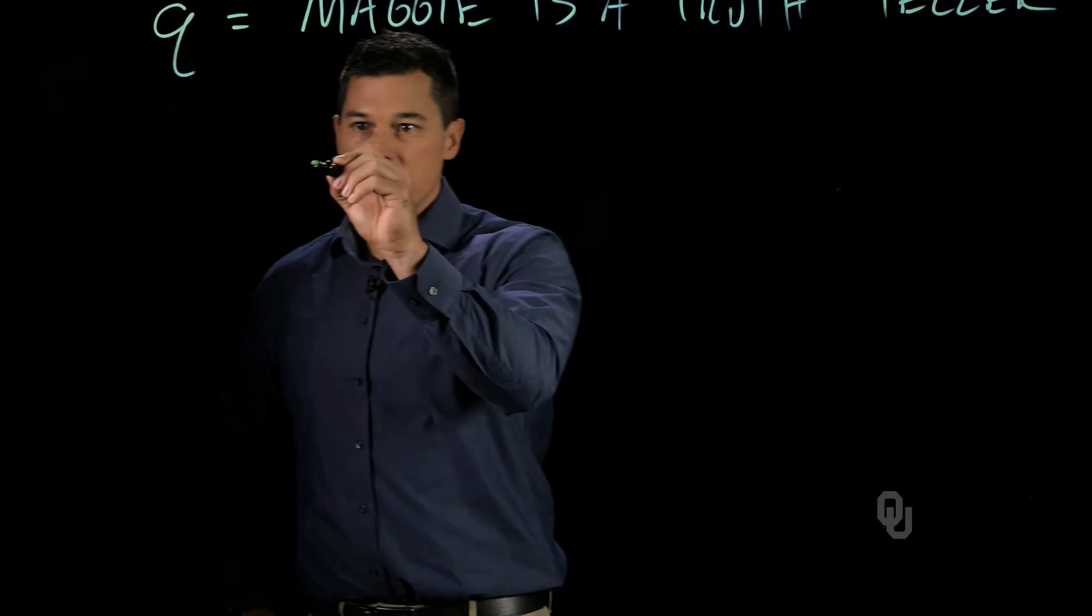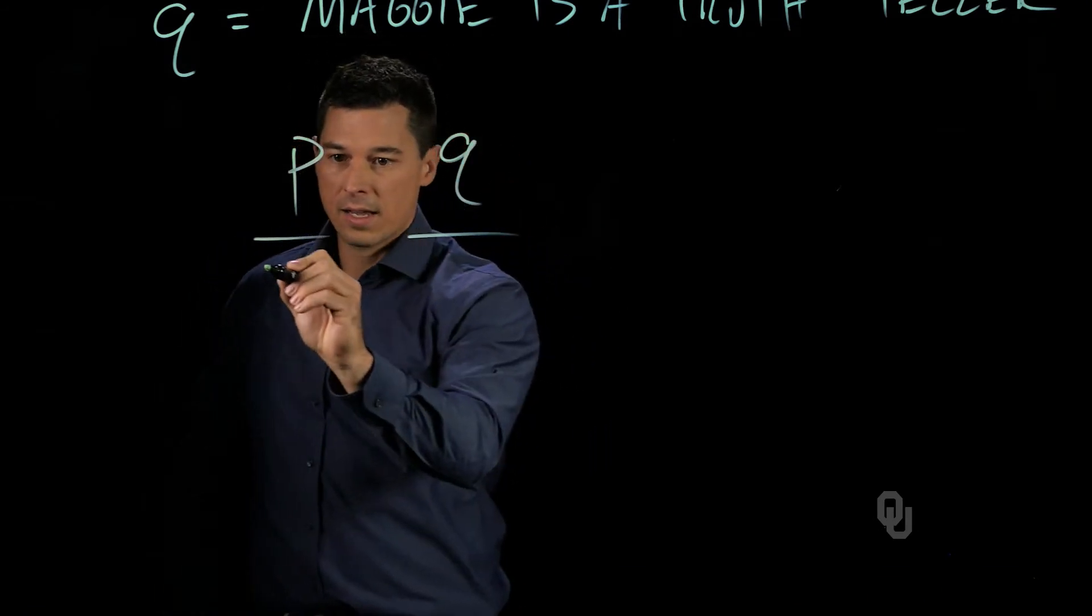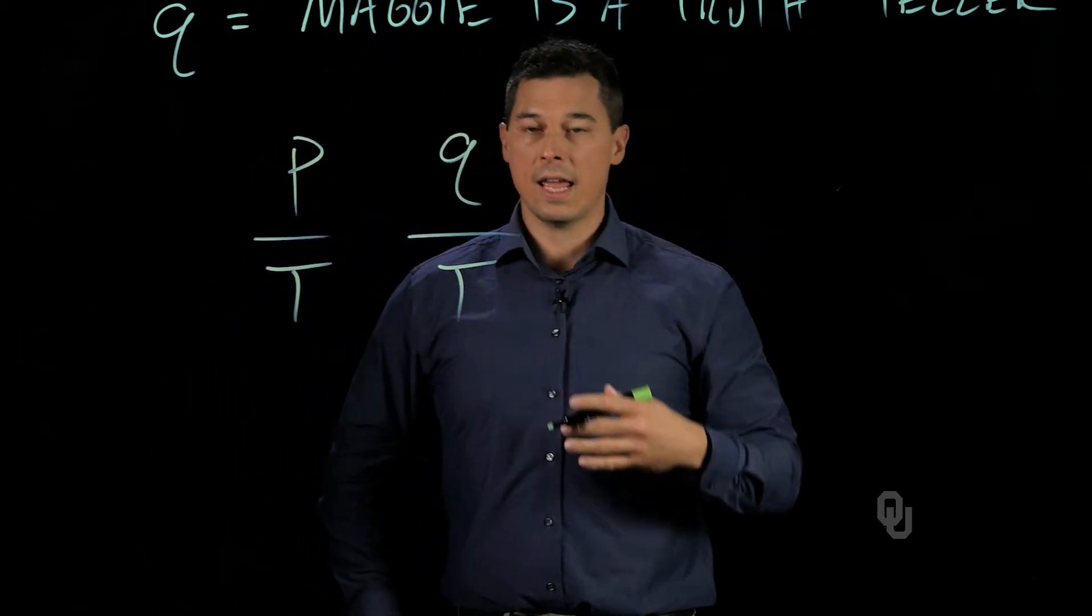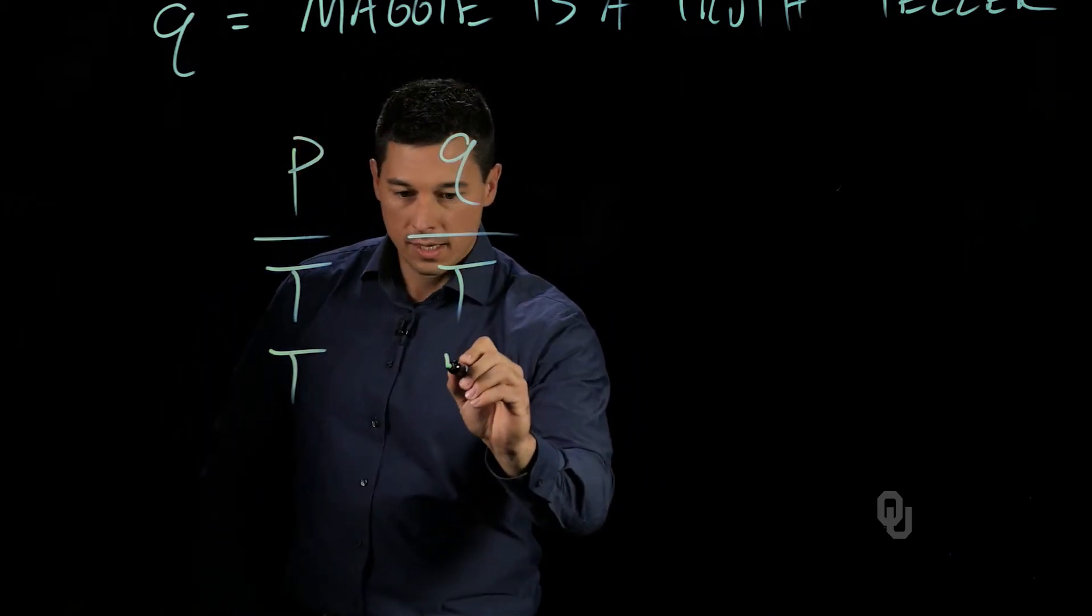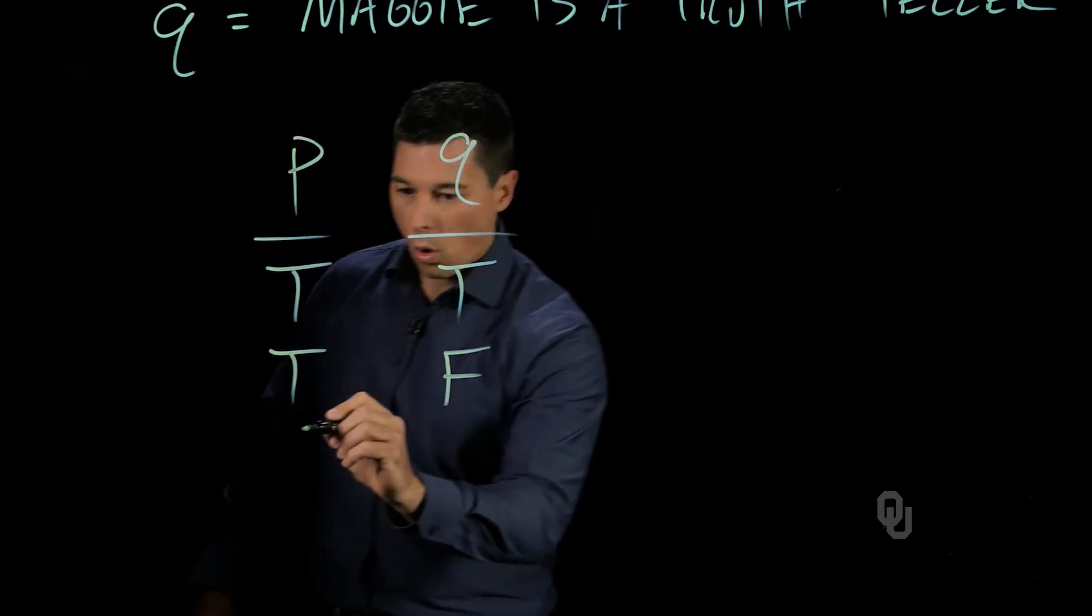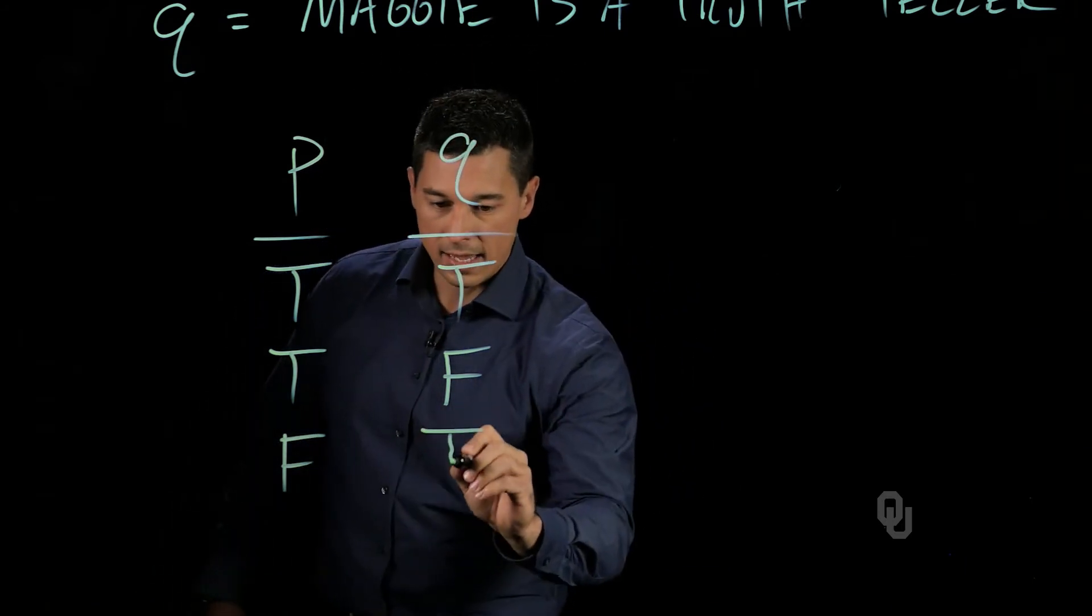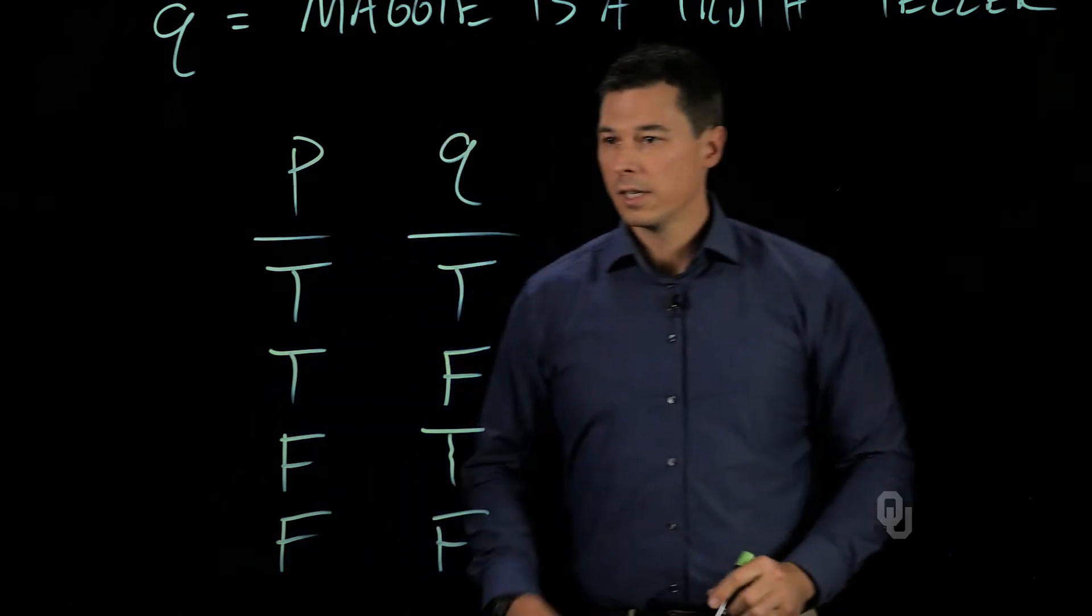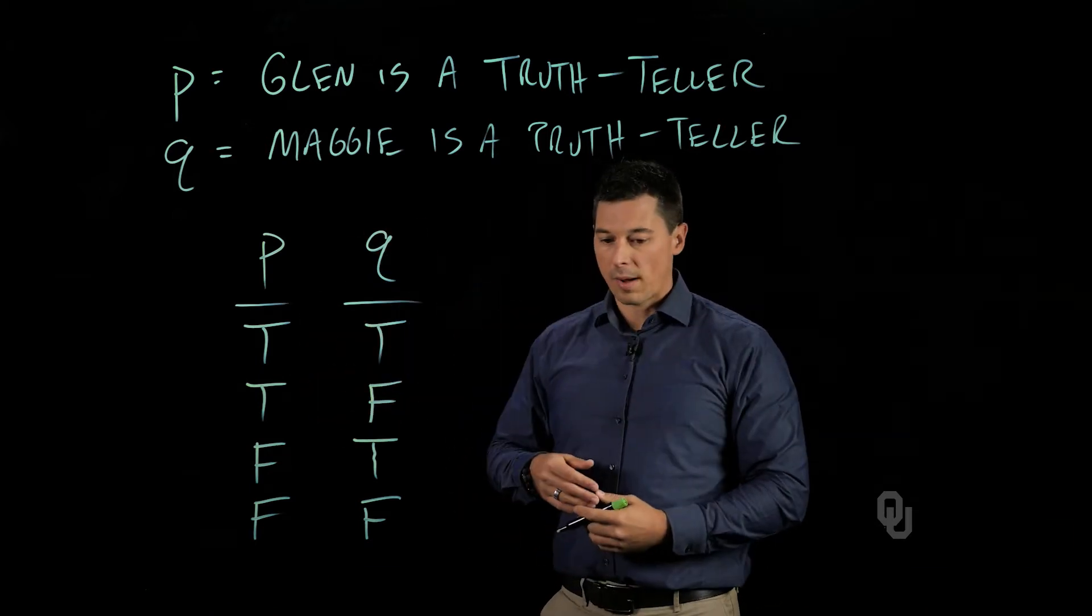So what we have is that P and Q, it might be that P is true and Q is true, so that both Glenn and Maggie are both truth-tellers. It might be that Glenn is a truth-teller but Maggie is not, or that Glenn is a liar and Maggie is the truth-teller, or that they're both liars. So this would represent a model of all possible scenarios that exist in this problem.